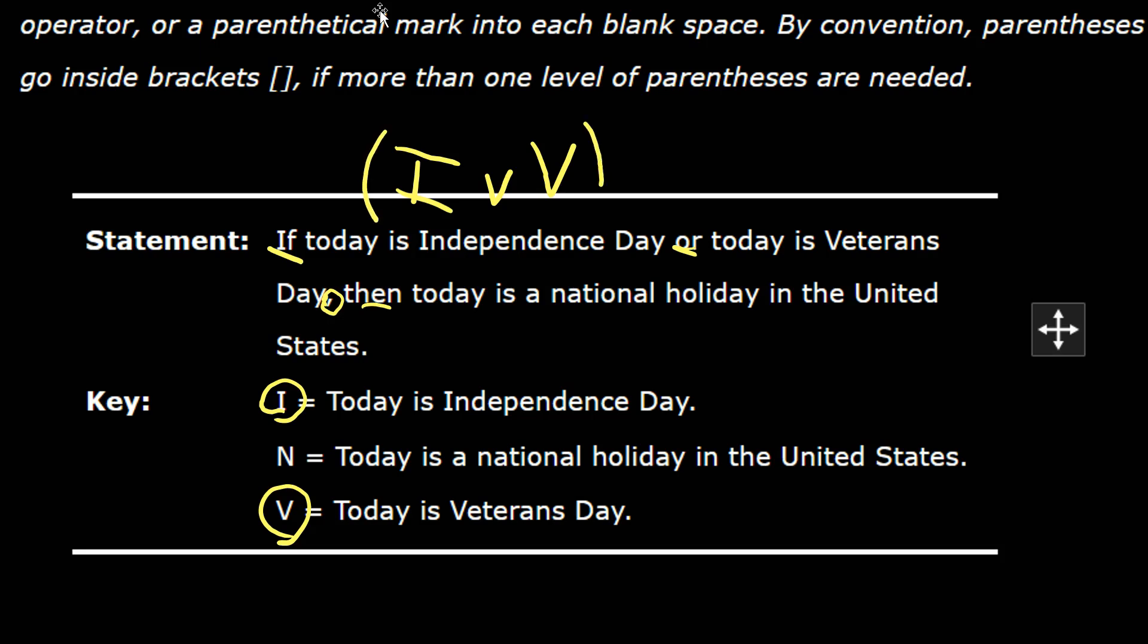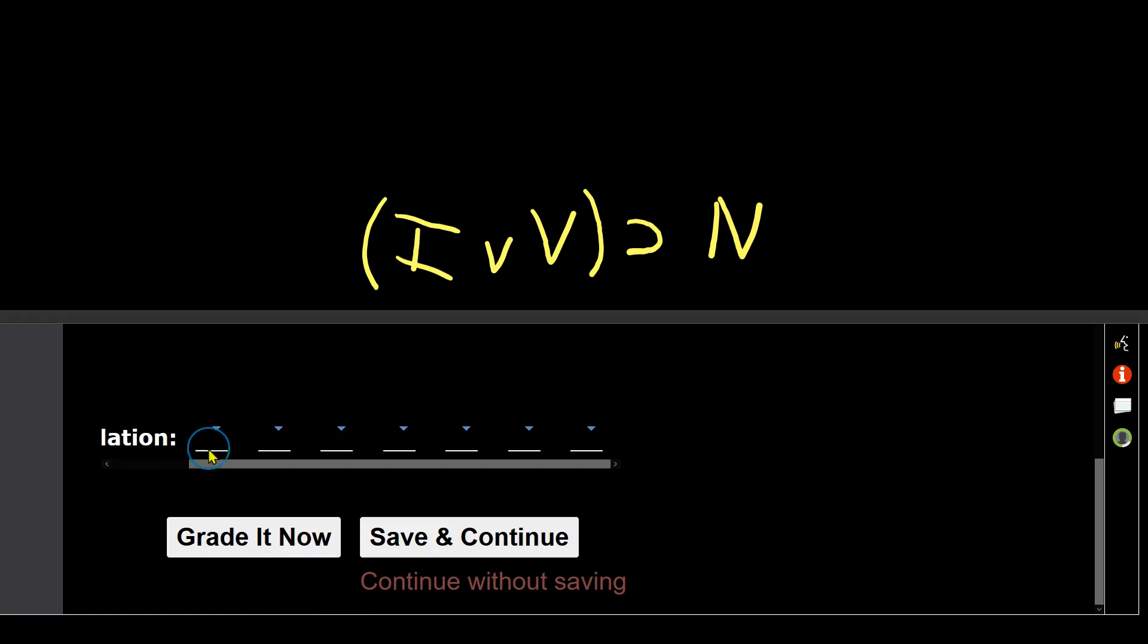But then there's an if then here. So I can tell that if I or V, then today is a national holiday, which is just N. So if I or V, then N. And I can put that in here, making sure to include my parentheses.